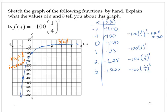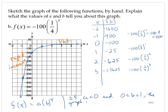And what do the a and b tell us? Again, if we compare to the general form a times b to the x, if a is negative and b is between 0 and 1, the graph is below the x-axis and increases.